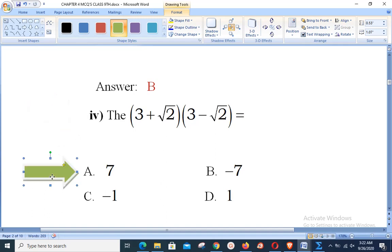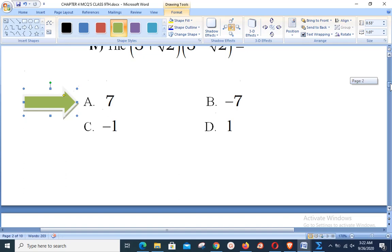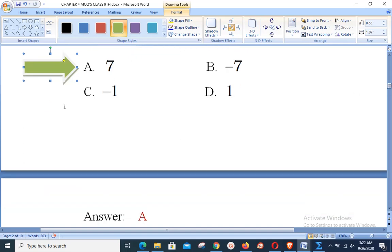In other words, it may come like this: that the product of a surd and its conjugate results in a rational number. So here in this case, option E is my correct answer.